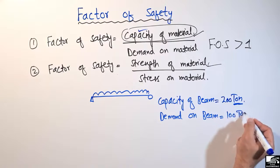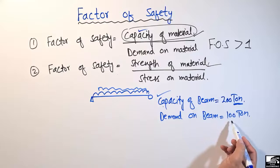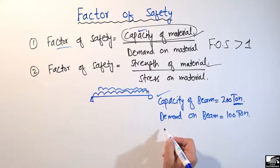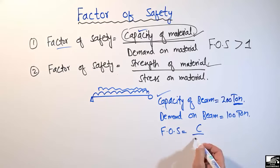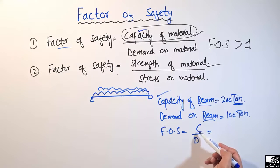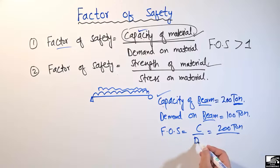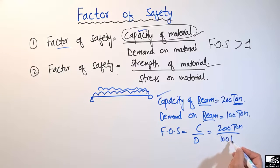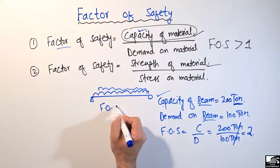The demand — the load coming on this beam — is let's suppose 100 tonnes. So the factor of safety equals the capacity of the beam divided by the demand on the beam. The capacity is 200 tonnes and the demand is 100 tonnes. Dividing these two values, the units cancel out, so factor of safety has no unit. We get 200 divided by 100, which equals 2.